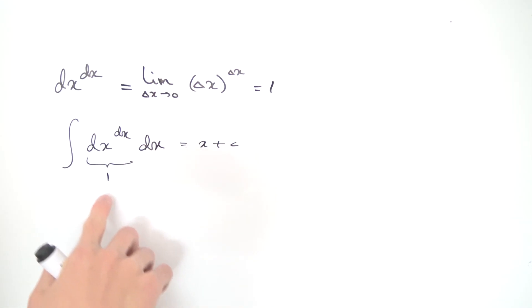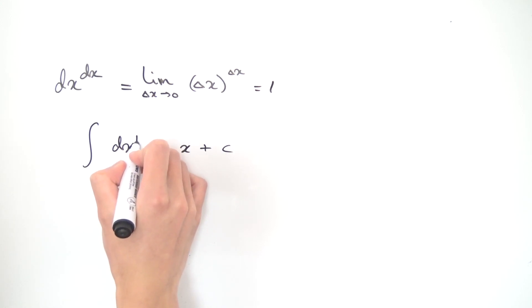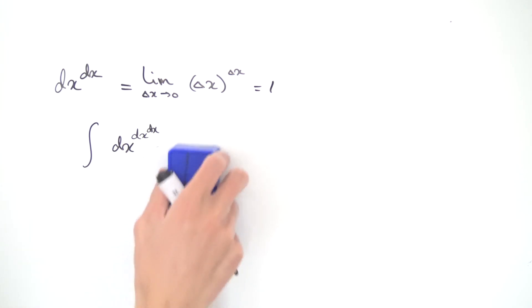But if you look hard enough, since dx to the dx is precisely one, we can also do things like integrating dx. We know how to integrate dx. That's just x plus c. But notice we can raise dx to the first power. So dx raised to the first power is still dx. But notice we can replace that one with dx to the dx. And so this guy over here also evaluates to x plus c, because this exponent is exactly one. And hopefully you can see the chain reaction coming over here.